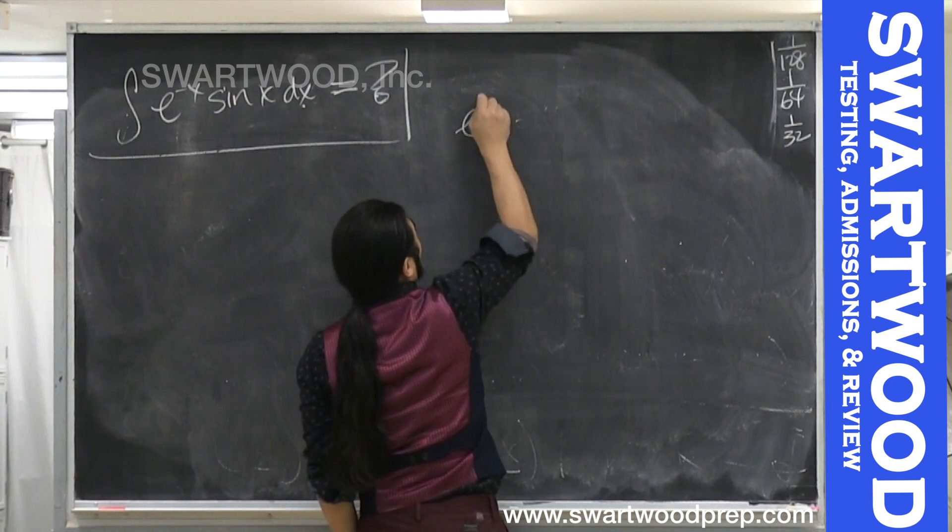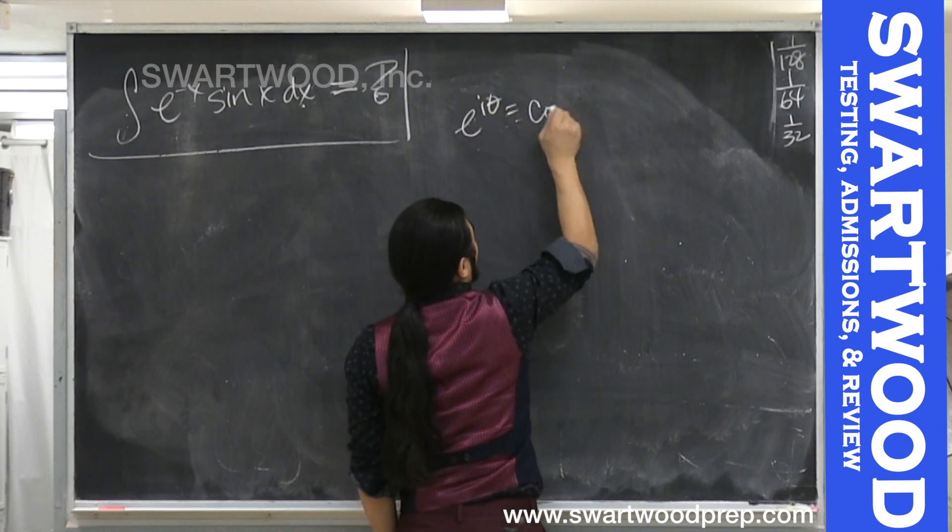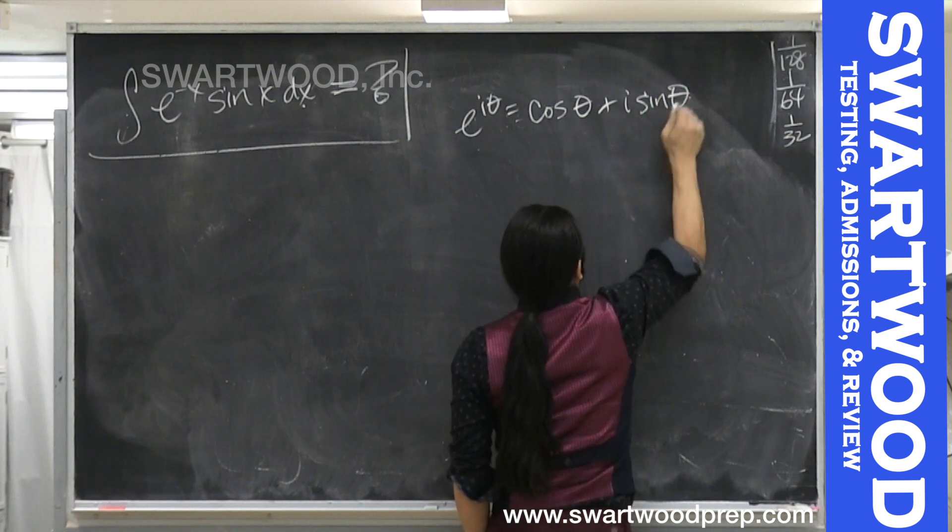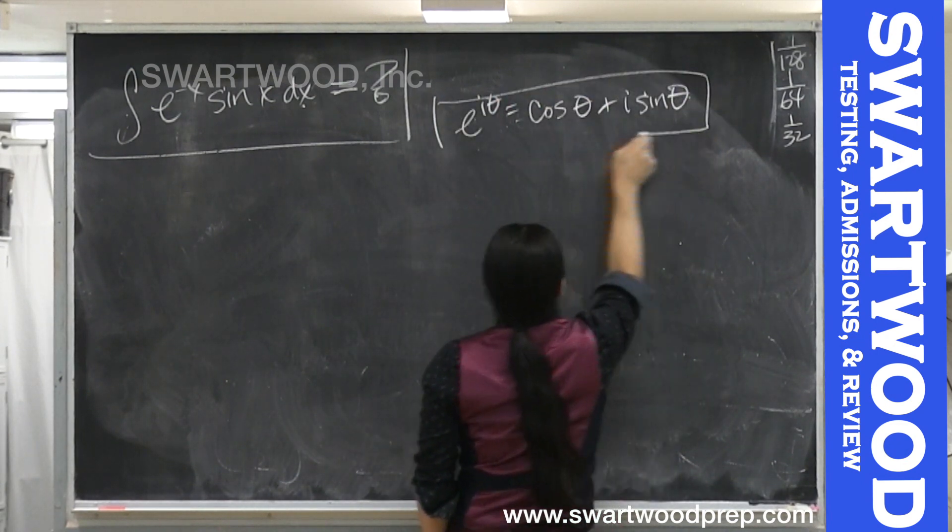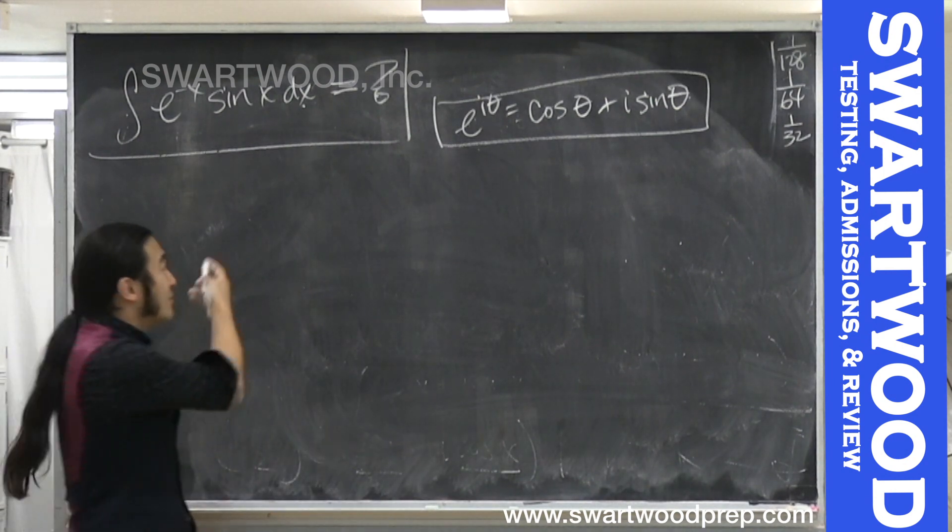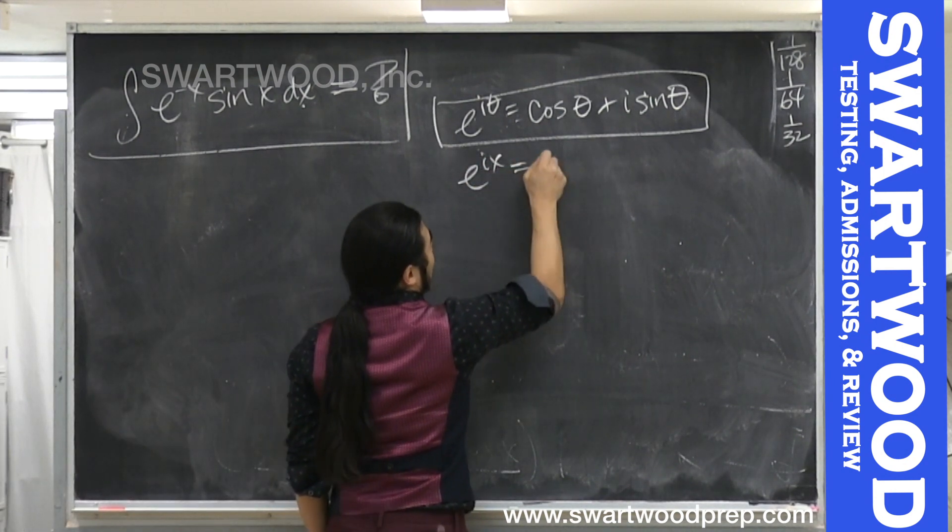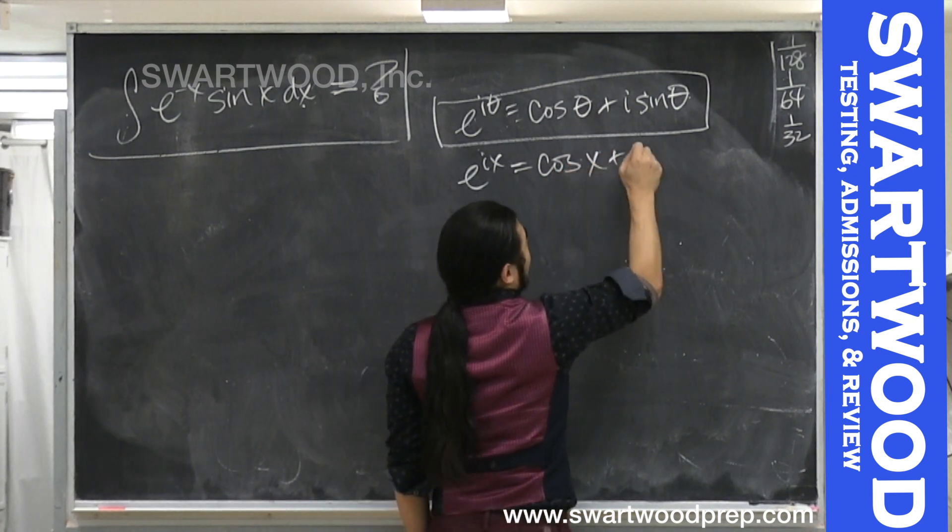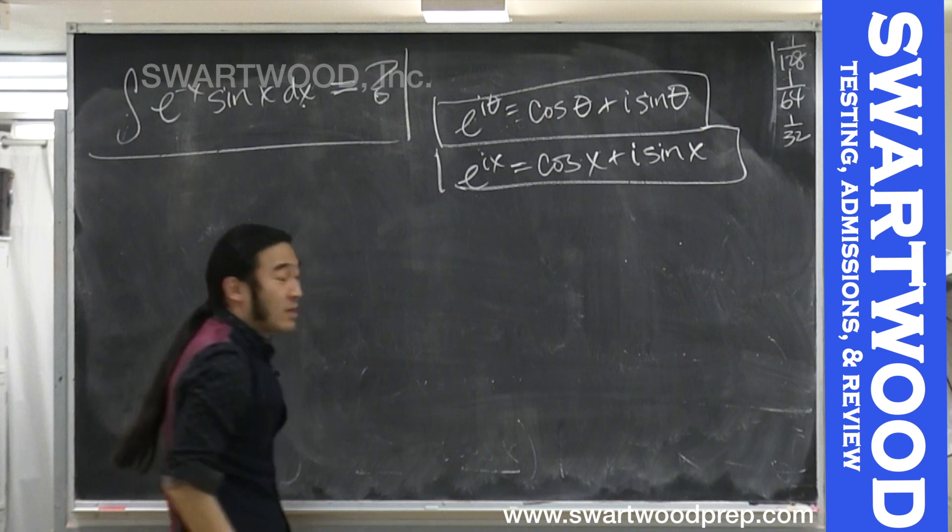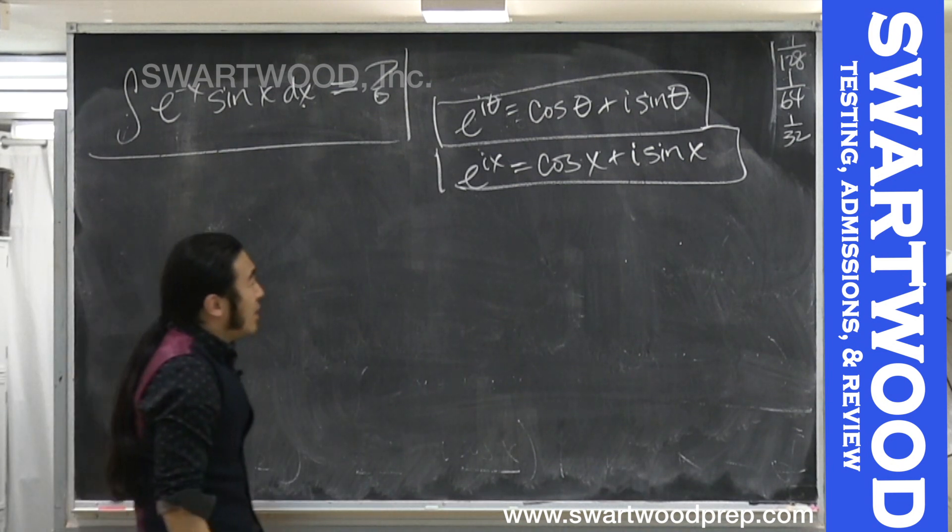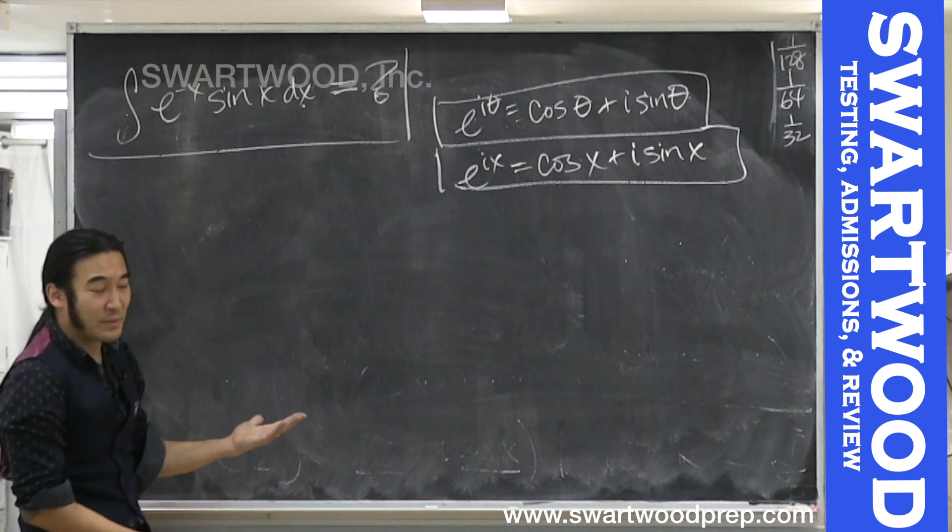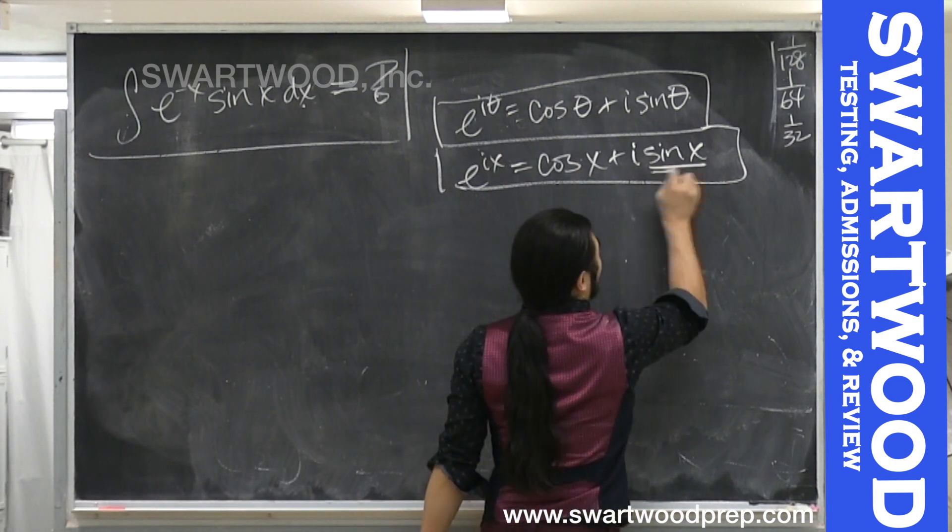So if you remember in polar form this complex number can be represented as e to the i theta. Obviously here the parallel we want to do is instead of theta we're just going to change the dummy variable and turn it into this. But again if you look at the setup, I don't really see sine and cosine, I just see sine, right? So what I really care about is this guy.